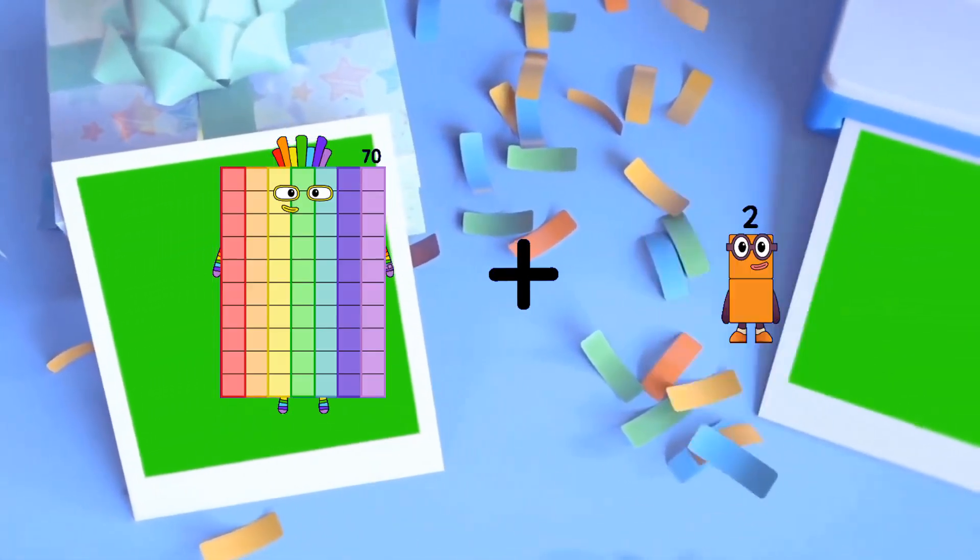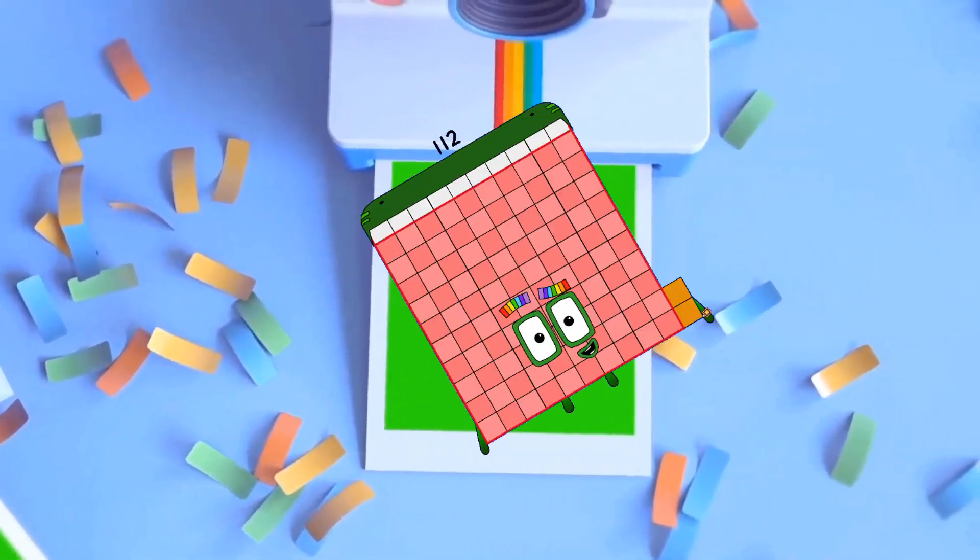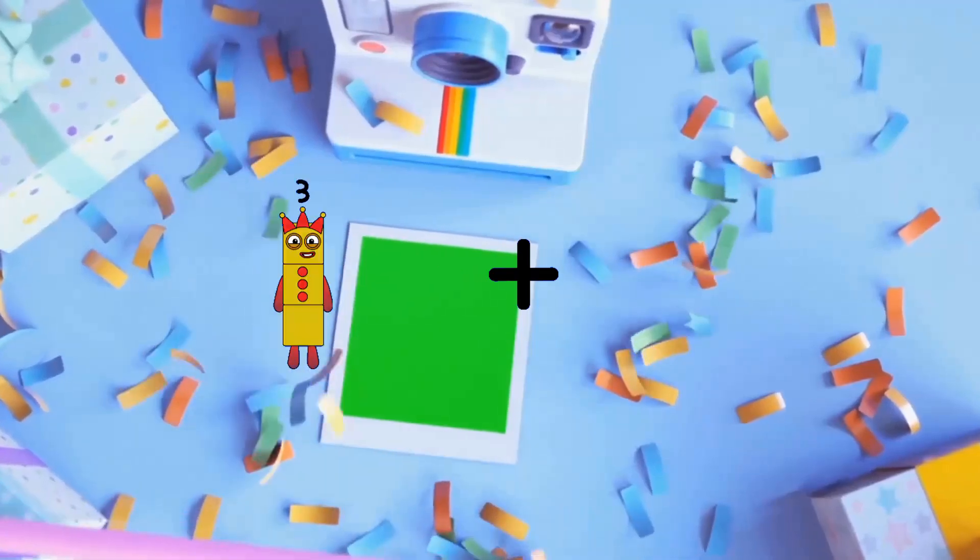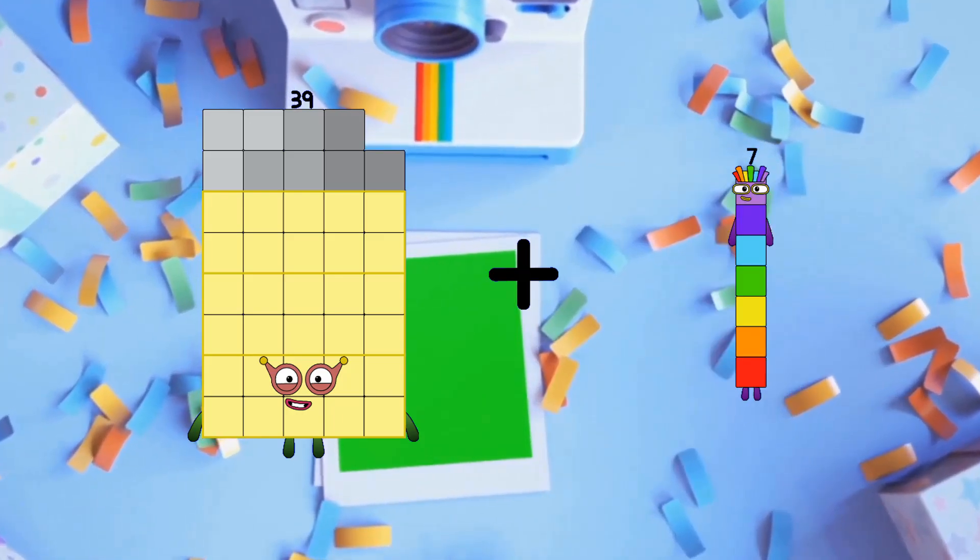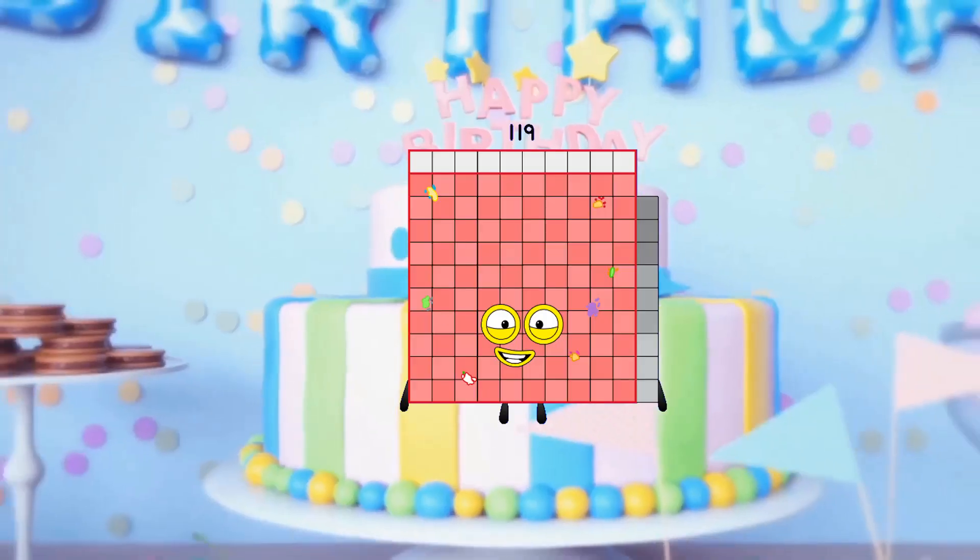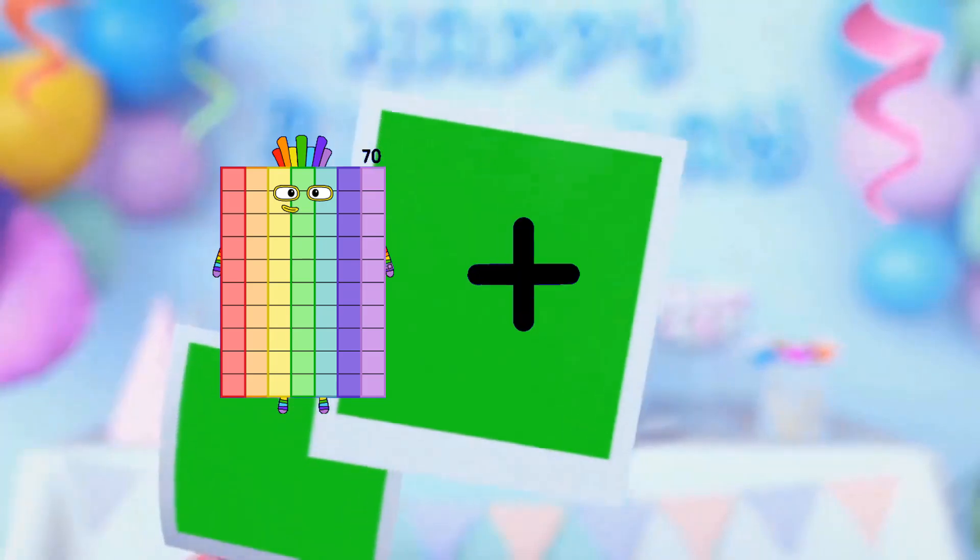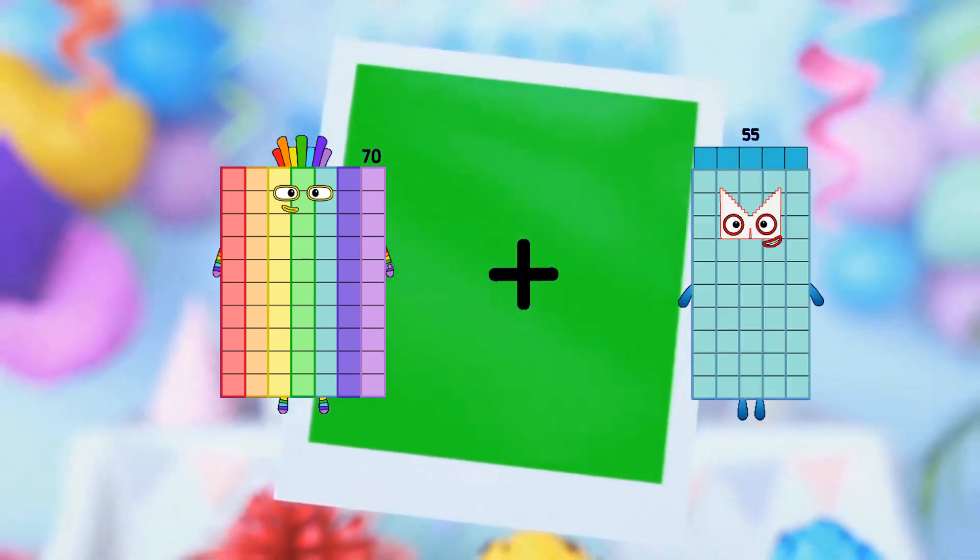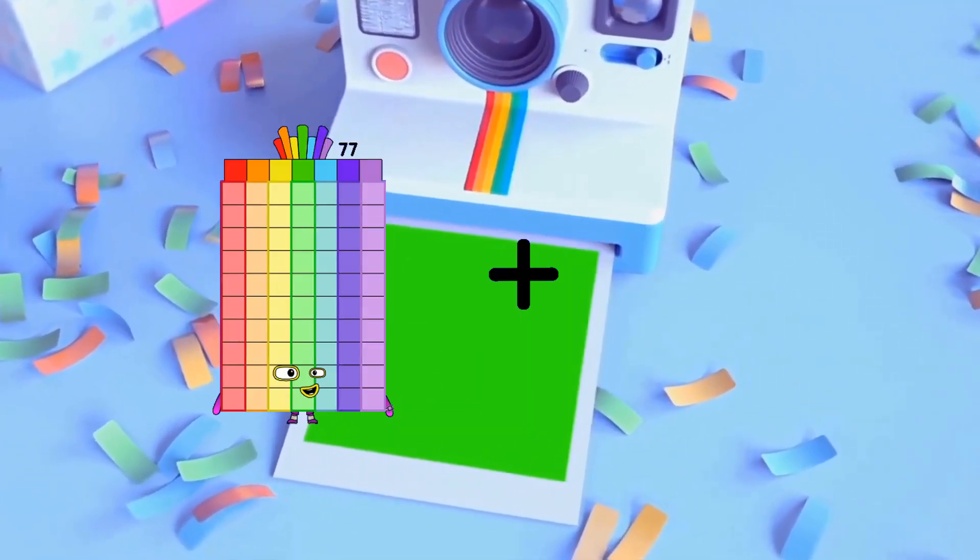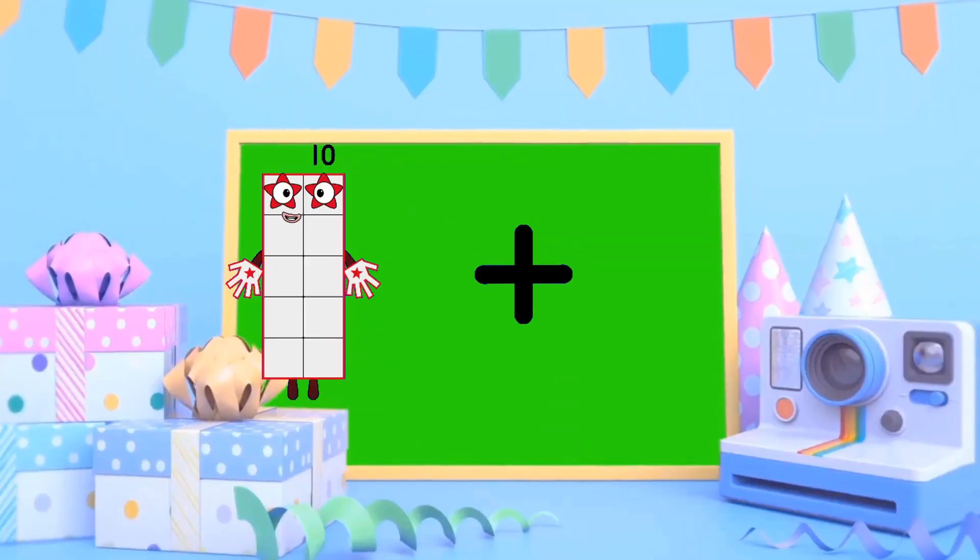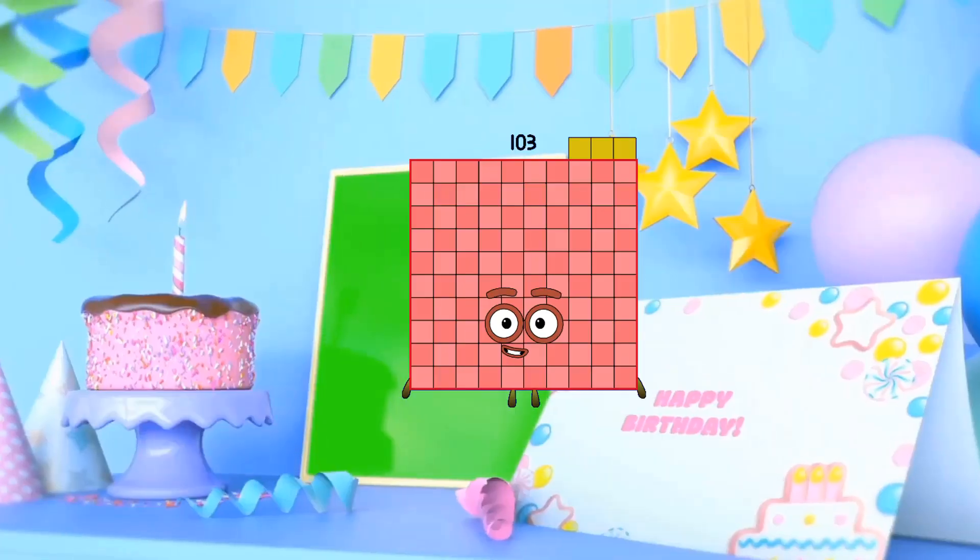70 plus 42 equals 112, 39 plus 80 equals 119, 70 plus 79 equals 149, 10 plus 93 equals 103.